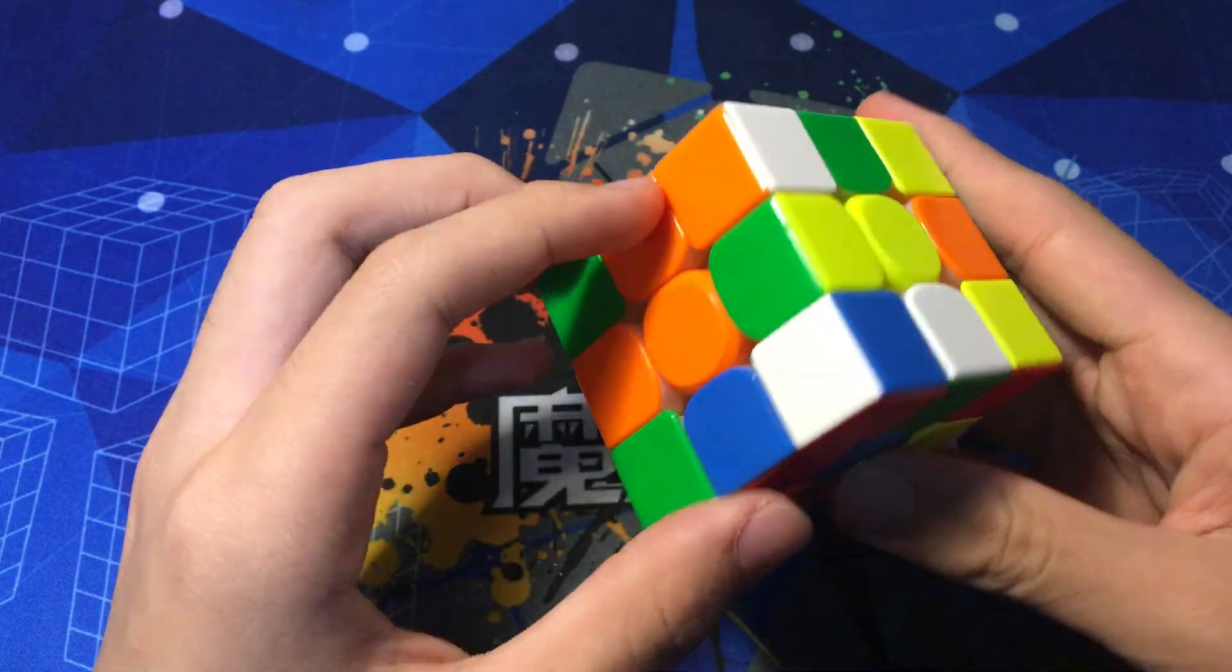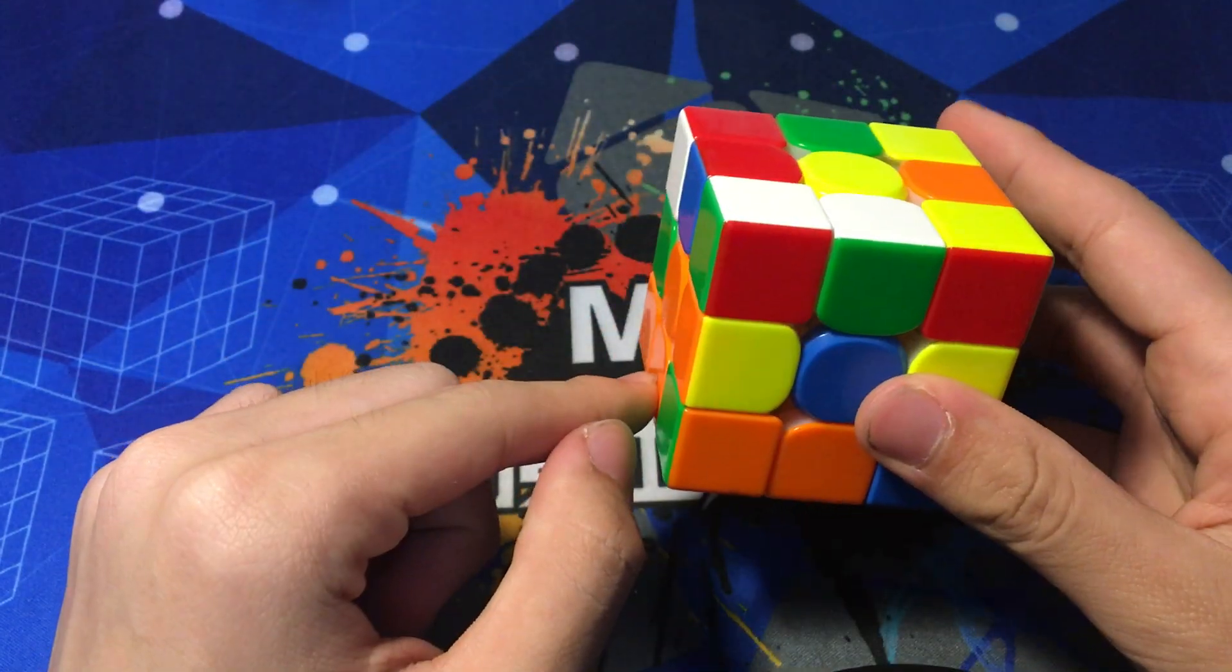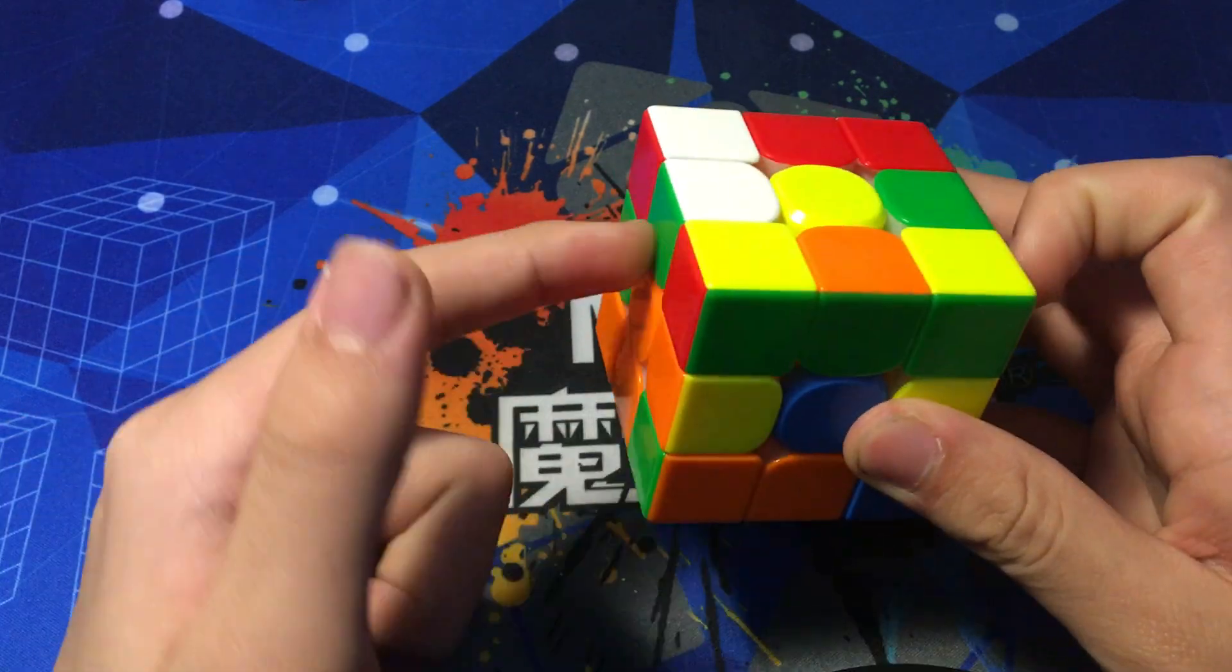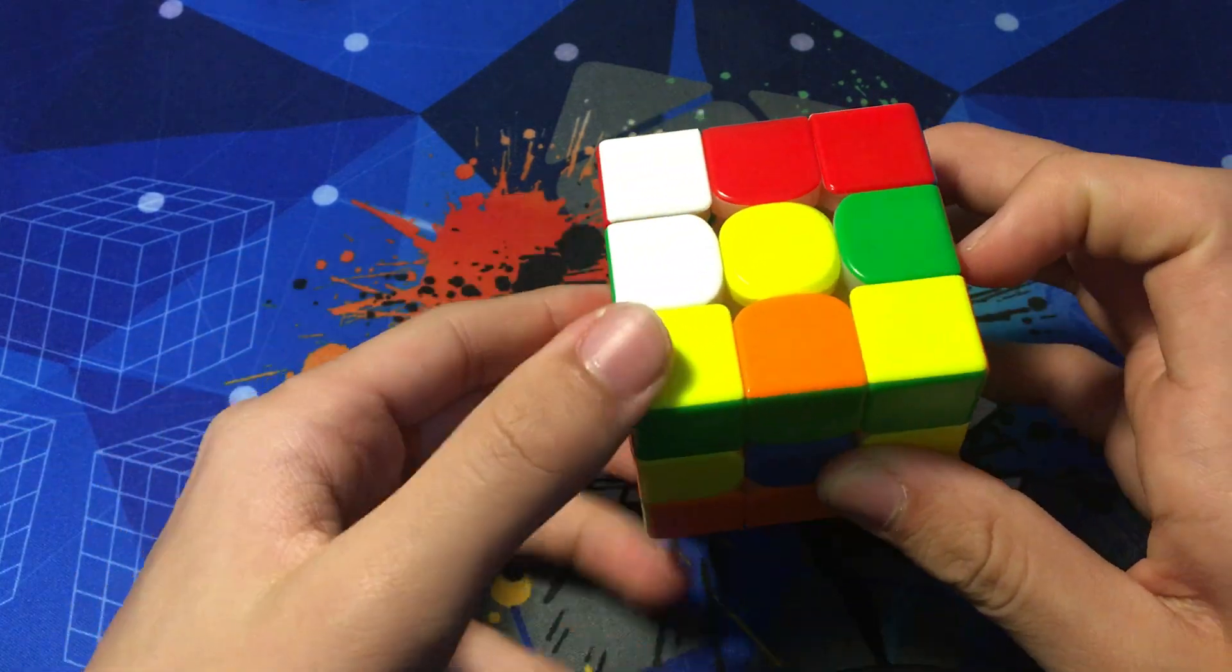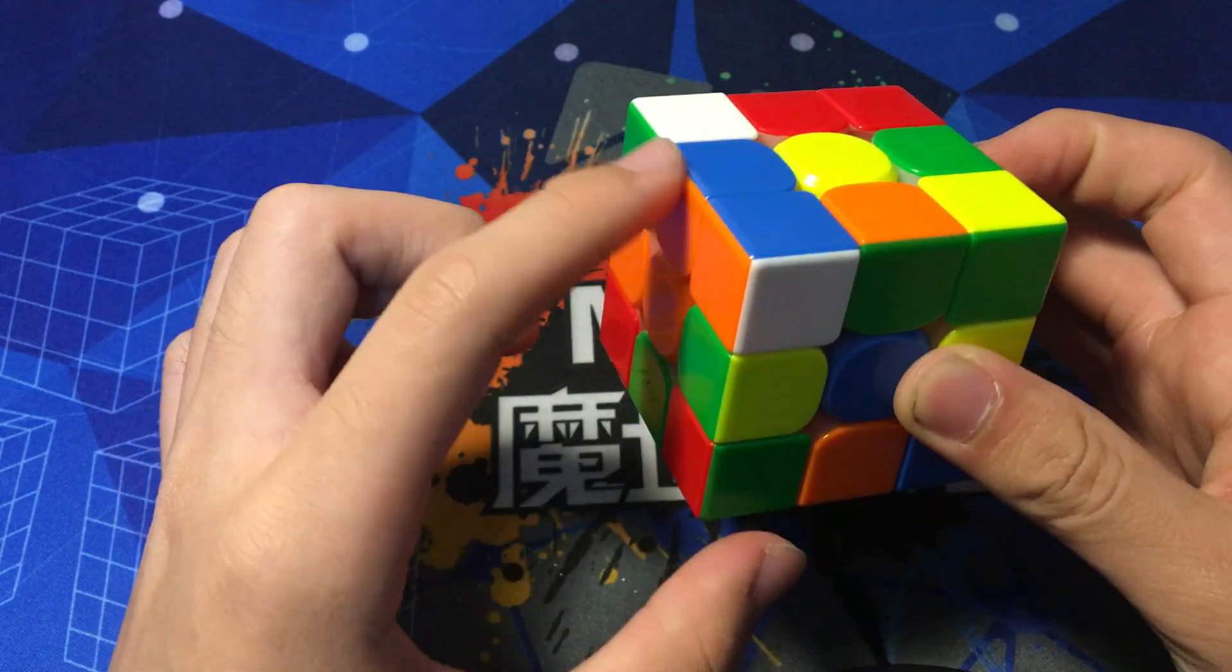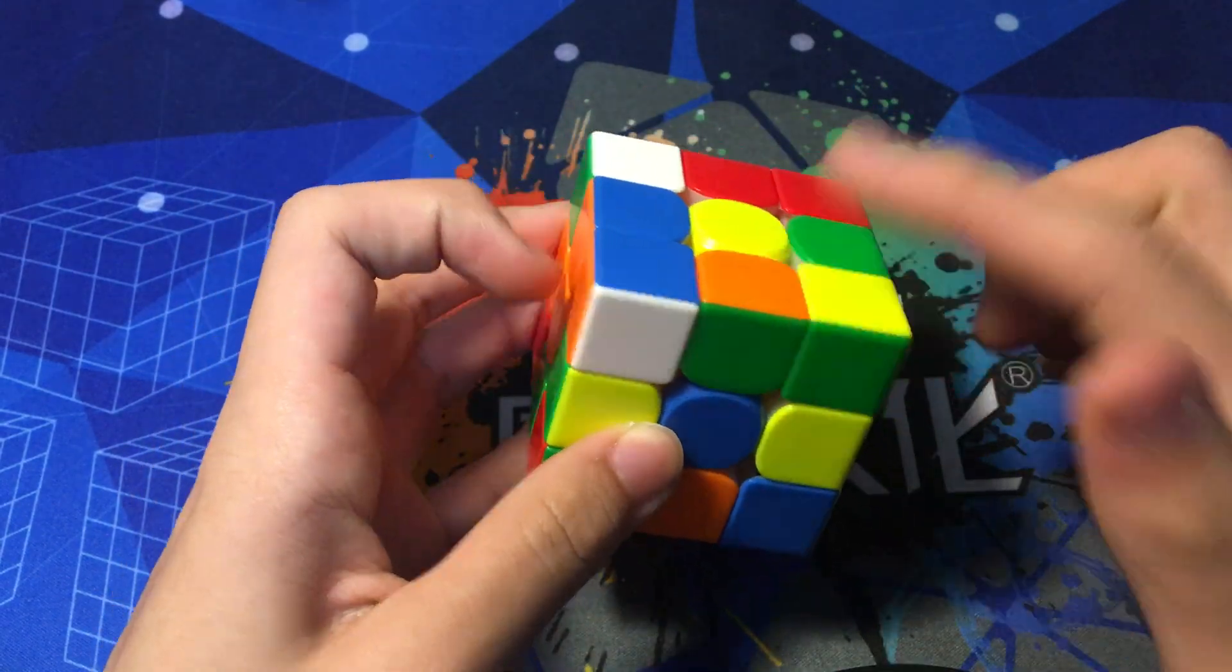We can actually first hide this pair into the bottom layer, and what that does is when we finally solve this edge, this will bring down this pair into the top layer, and it will also set up these two.